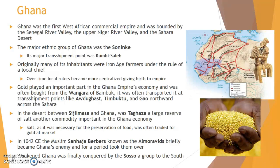In 1042 CE, Muslim Sanhaja Berbers known as the Almoravids, who over the centuries had traded with Ghana, became Ghana's enemies and took control of the transshipment points. For a time they ruled Ghana as a province of an empire that reached into central Spain, but Ghana recovered some of its independence within 50 years. Ghana fell for the last time in 1203 CE to the Sosso from farther south. One of West Africa's greatest dynasties — that of ancient Mali — would soon fill this vacuum in power.